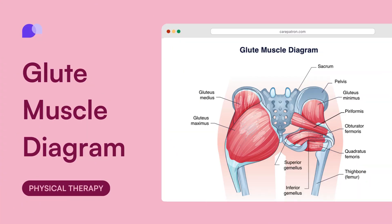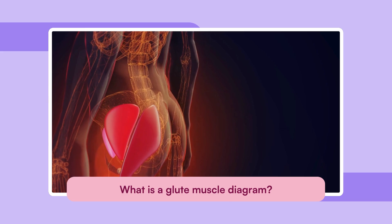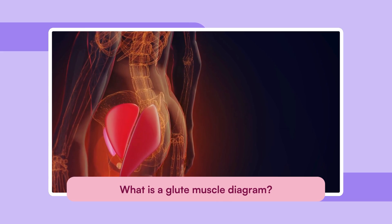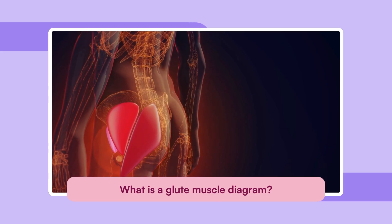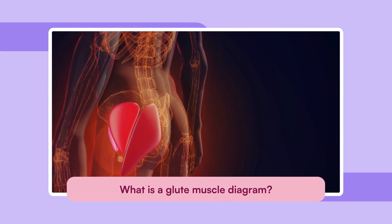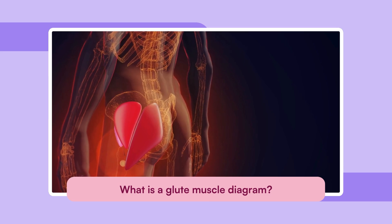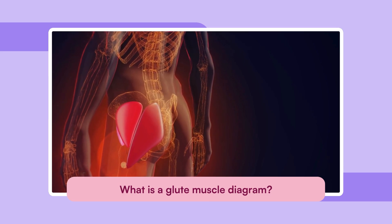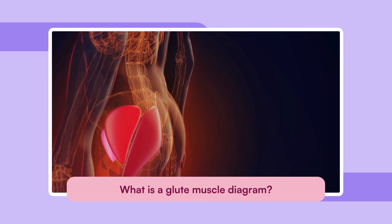A glute muscle diagram is a visual representation of the key muscles in the gluteal region, located in the posterior pelvis and buttocks. It highlights vital muscles like gluteus maximus, gluteus medius and gluteus minimus, each of which plays a critical role in movement, stability and strength.